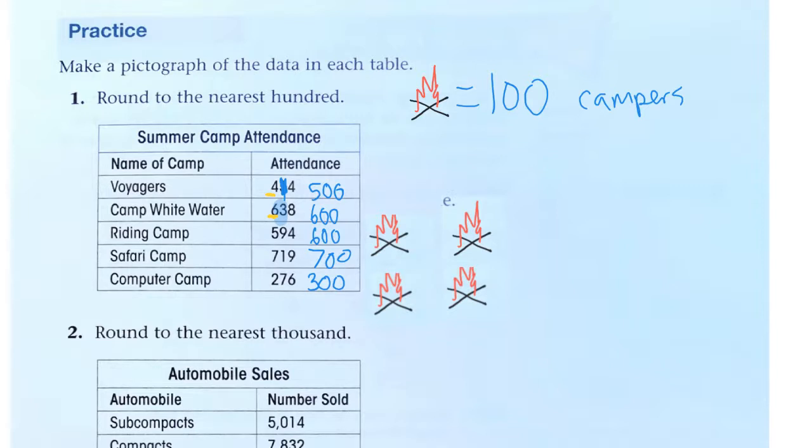So we look at the three and we are rounding to the hundred. If it's five or more, up the score. If it's not, it stays the same. So now we need our symbols.